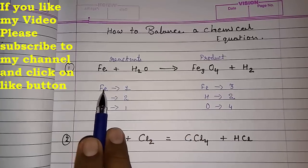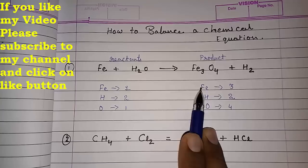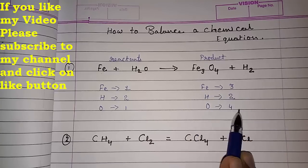Now look here. Here we are having Fe1, H2, O1 on the left side. On the right, Fe3, H2 and O4. Now the first question arises.